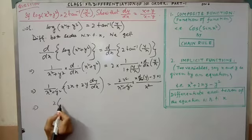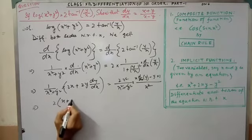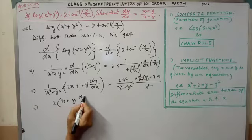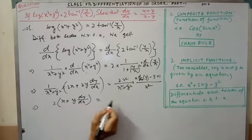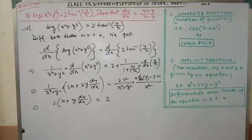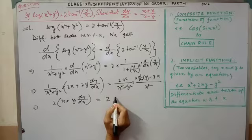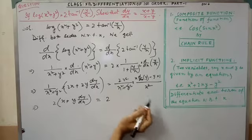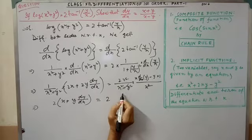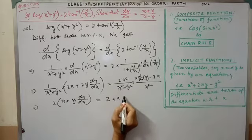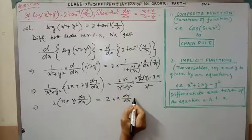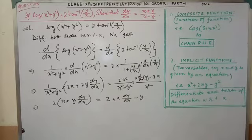Now, we may take common 2 from here. That is, x plus y dy by dx. And here, x into x dy dx minus y.